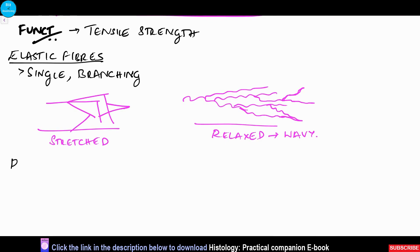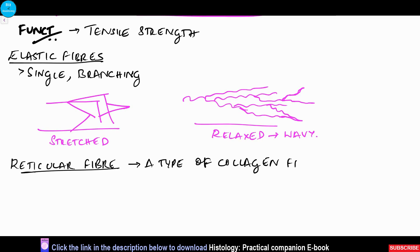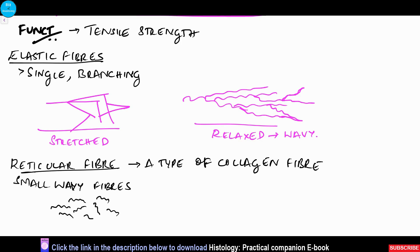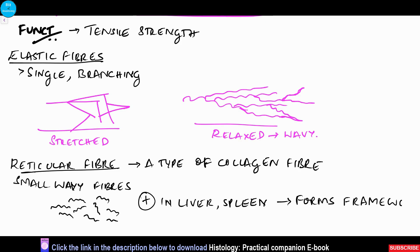The last type is the reticular fiber, which is a type of collagen fiber. Here we see small wavy fibers which are unbranching, and usually it does not take up H&E stain. So we should use special stains like silver stains. It is present in the liver and spleen where it forms the framework.